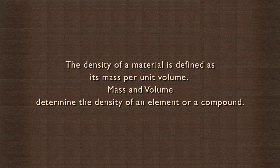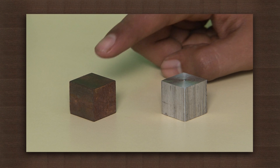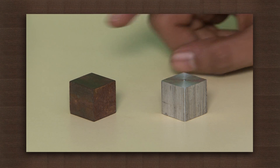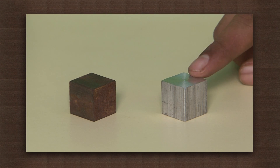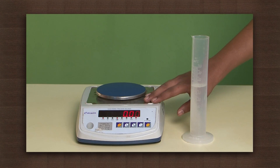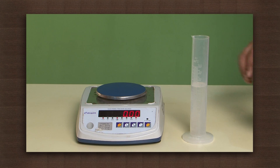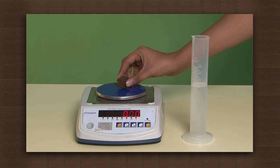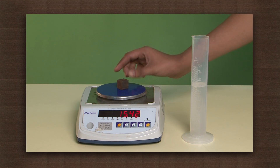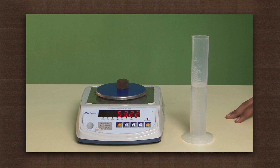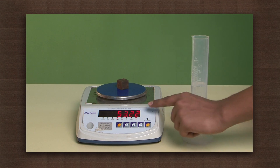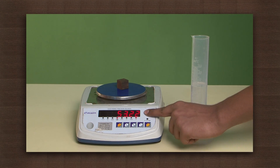Let's take two metals and find out their densities. Here we have an iron cube and an aluminum cube, a digital weighing scale to measure mass, and a measuring cylinder to measure volume. Place the iron cube on the scale — its mass is 53.22 grams.